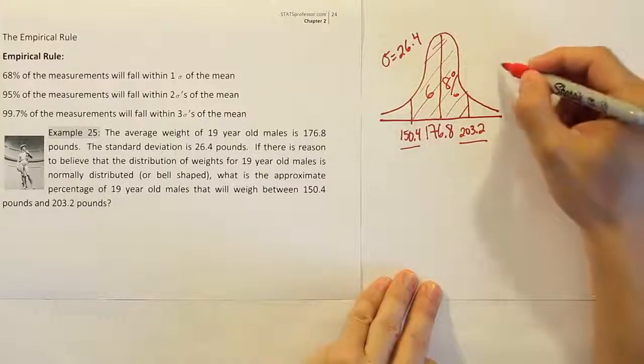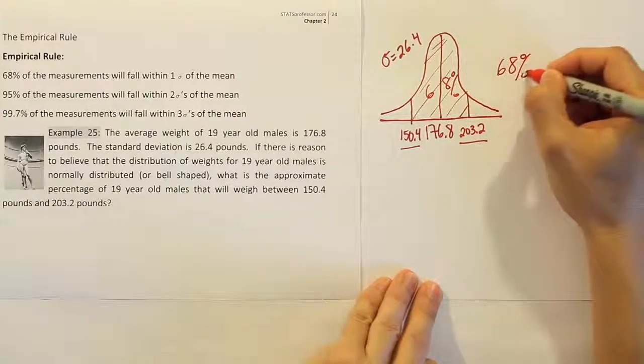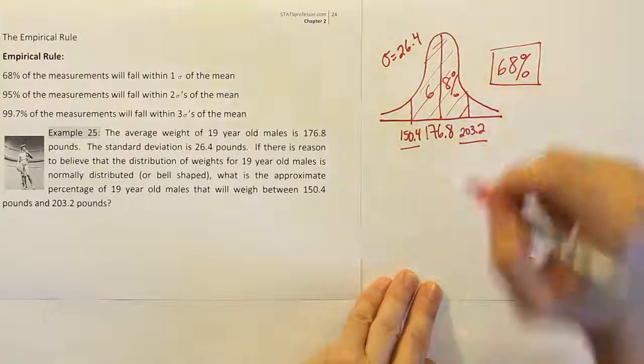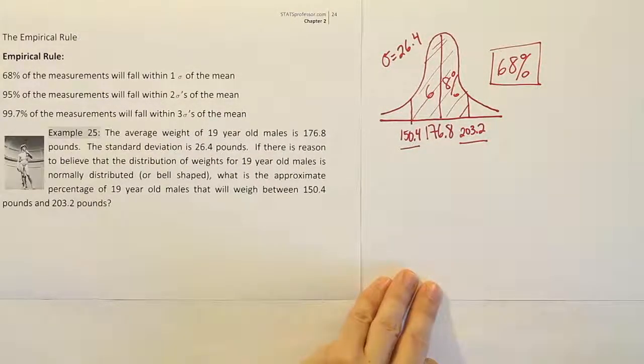And so that's the answer to the question. The answer for this problem is 68%, because it's one standard deviation above and below the mean, and that's how the interval has been created. Okay, that's it.